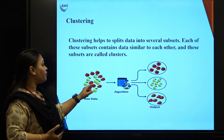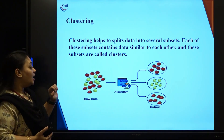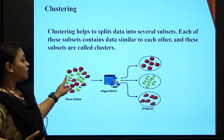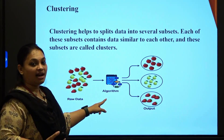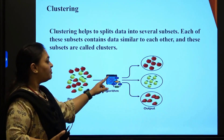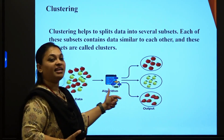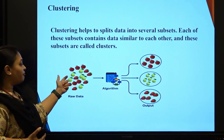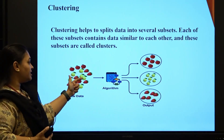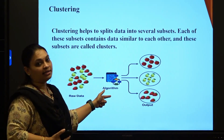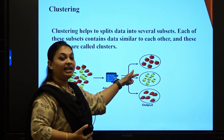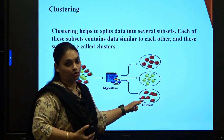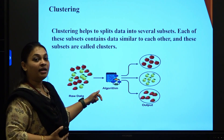Looking at the diagram here, this is the combination of all different raw data. When I apply a data mining algorithm to my raw data, it segregates into different groups. In the raw data you have apples, pears, and strawberries. When I apply the algorithm, it segregates all apples together, all pears together, and all strawberries together.